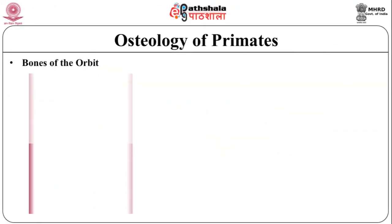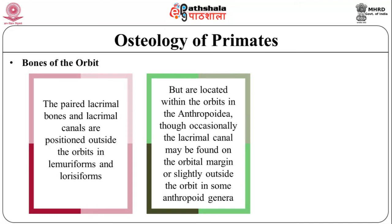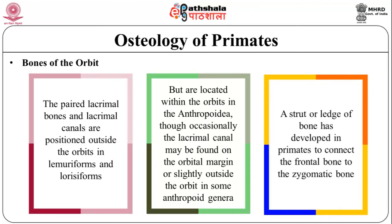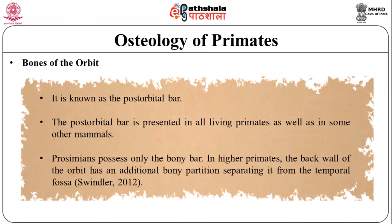Now let us discuss the bones of the orbit. This figure illustrates the difference in orbital bones in anthropoids and prosimians. The paired lacrimal bones and lacrimal canals are positioned outside the orbits in lemuriforms and lorisforms, but are located within the orbits in anthropoids, though occasionally the lacrimal canal may be found on the orbital margin or slightly outside the orbit in some anthropoid genera. A strut or ledge of bone connecting the frontal bone to the zygomatic bone has developed in primates, known as the post-orbital bar. The post-orbital bar is present in all living primates as well as in some other mammals. Prosimians possess only the bony bar, while in higher primates the back wall of the orbit has an additional bony partition separating it from the temporal fossa.